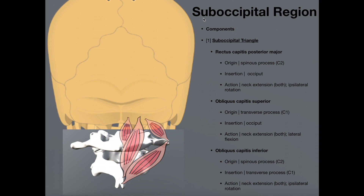Why is this region called the suboccipital region? If we look here in this image, we have the back or posterior aspect of the skull. This cranial bone right here is of course the occipital bone. And so all of these structures pretty much lie beneath the occiput or occipital bone, so they are considered suboccipital.